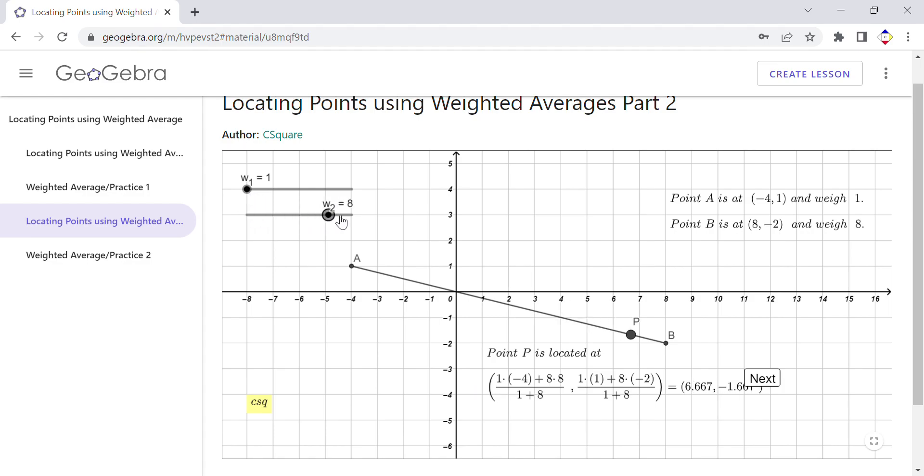You notice the same idea. I can play with these sliders. I may make the weight larger, like 10. You notice how close it goes to B because the weight of point B is larger and larger. The same if I change the weight of A.